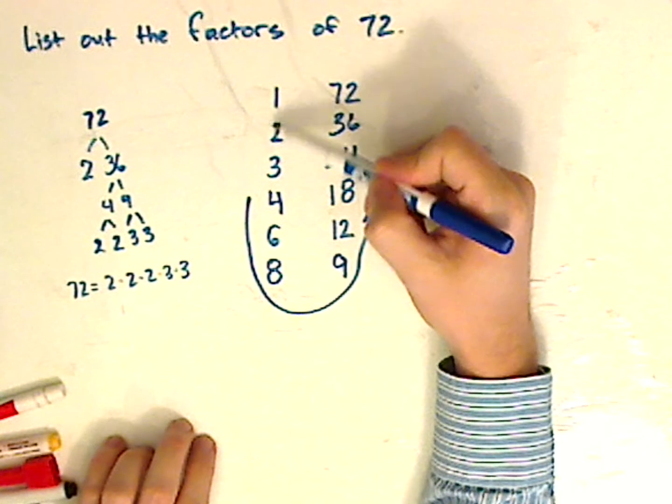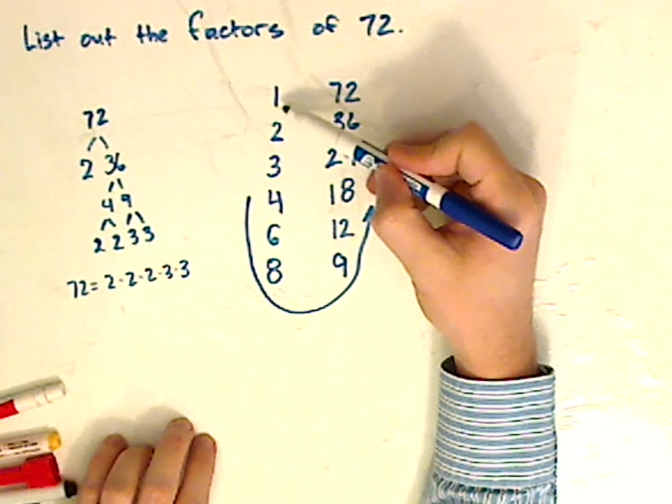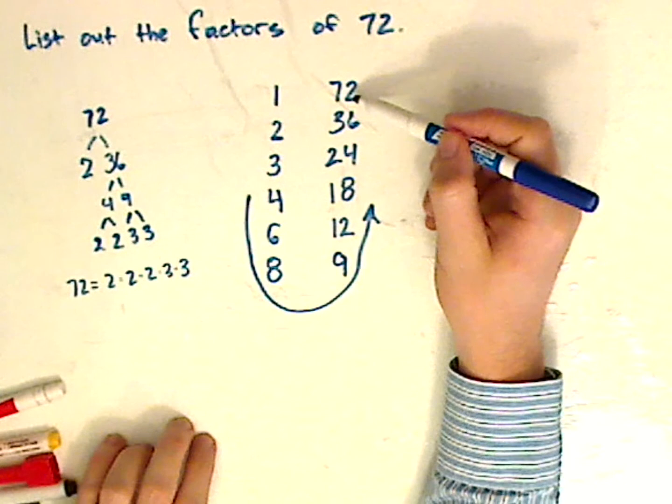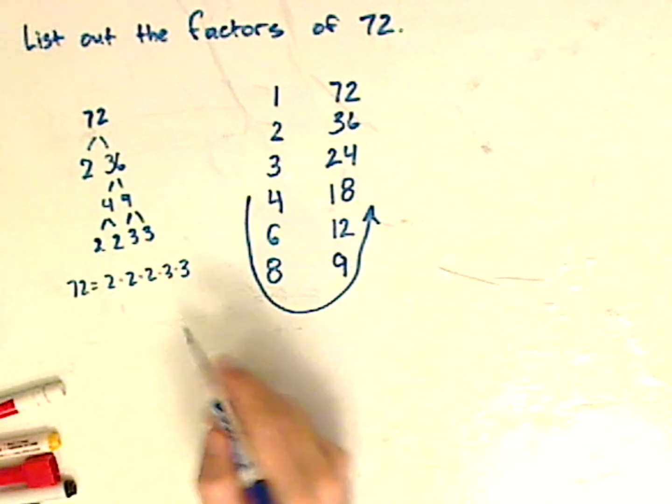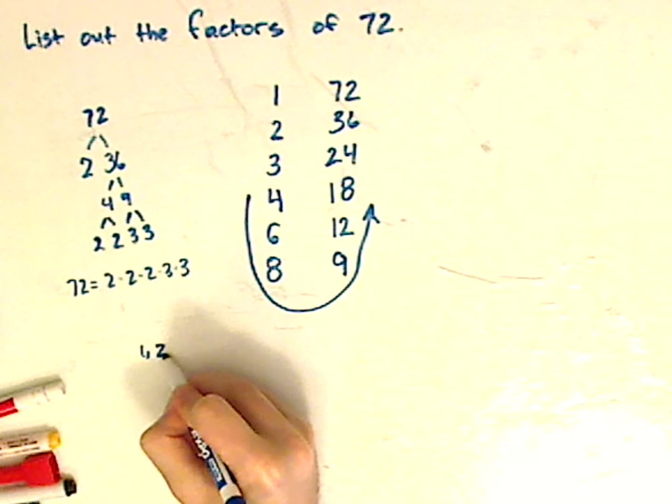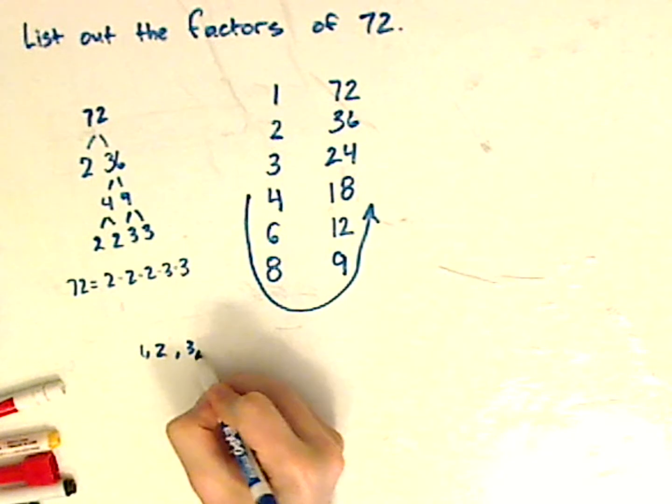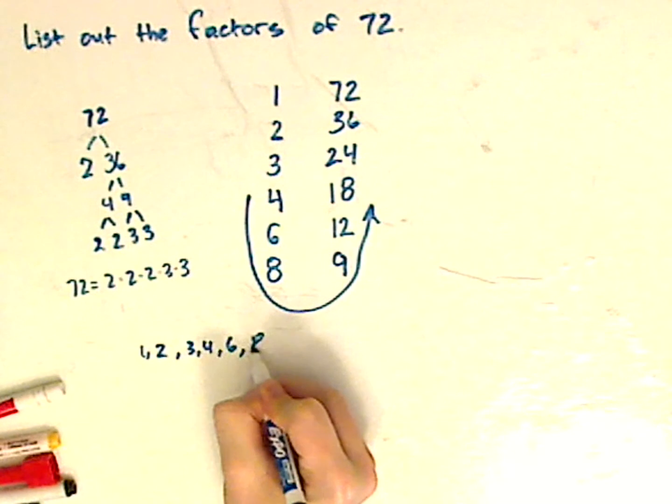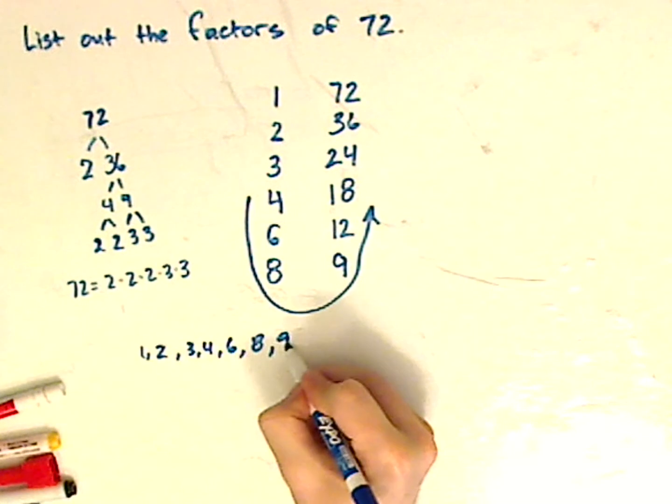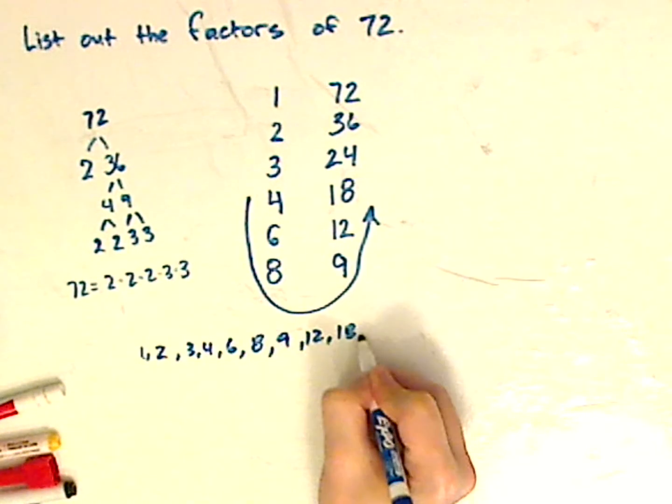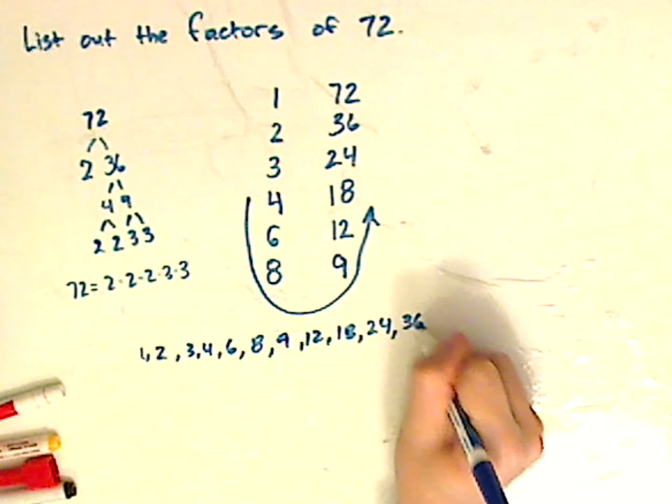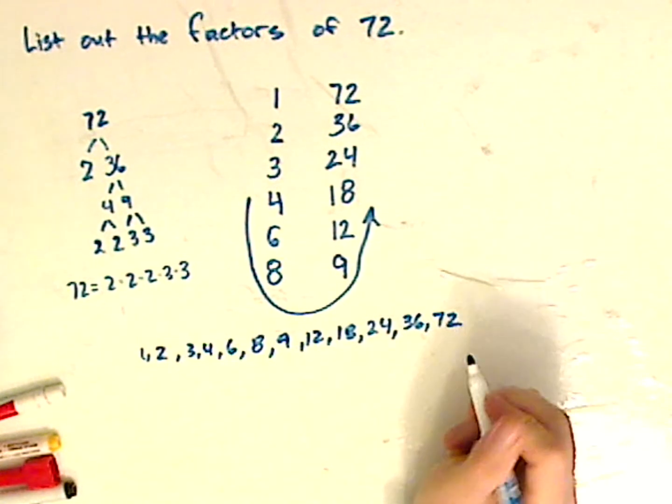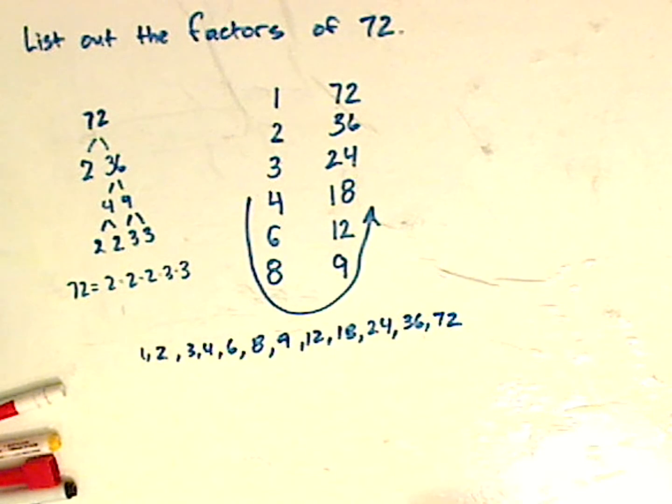You can always check because if you do it in order, this is going down, and then this goes up to 72. So then list them. So it's 1, 2, 3, 4, 6, 8, 9, 12, 18, 24, 36, and 72. And those would be all the factors of 72. And that's it.